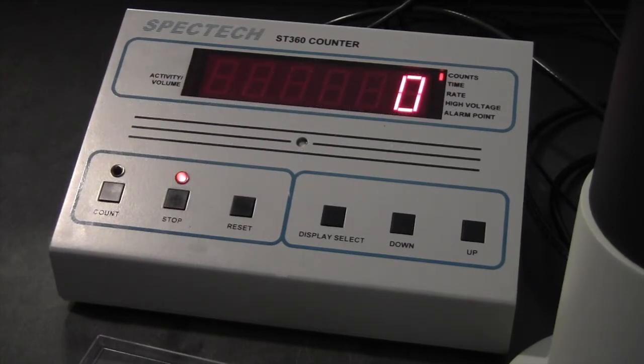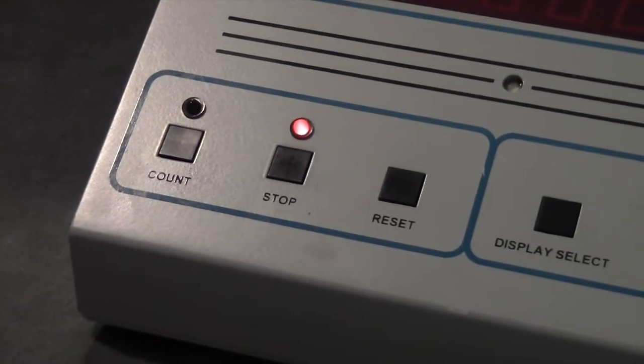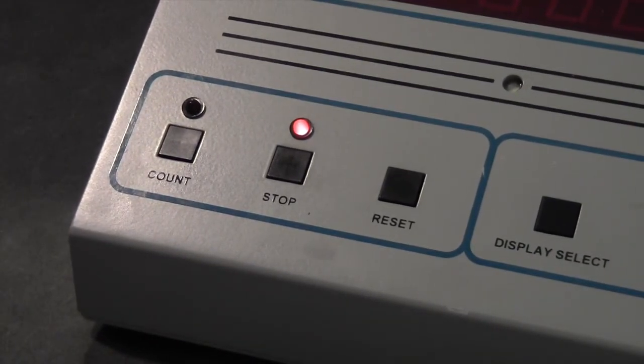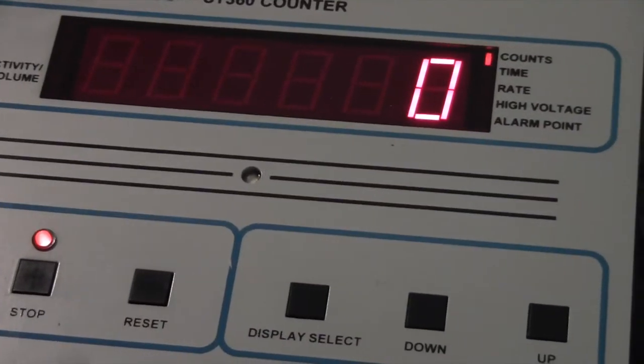First, we will demo the unit in standalone mode and have a look at the controls. It's almost self-explanatory. The count button starts the counts and timer in the event data acquisition. The stop button stops the timer and counting. Reset resets the counts to zero. And the display select control toggles the different modes.